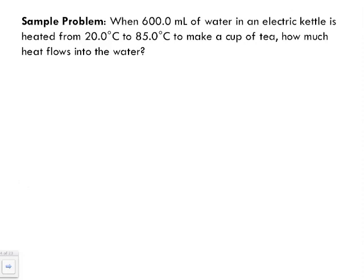When we're looking at this, we want to identify what information is given. Right now, 600.0 milliliters is the volume of water that we're putting into this electric kettle. The initial temperature is 20 degrees Celsius and it's increasing to 85 degrees Celsius.